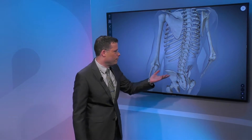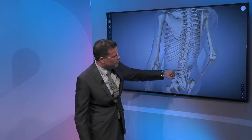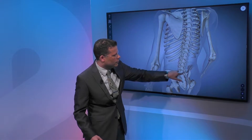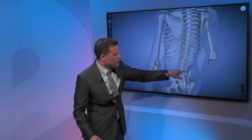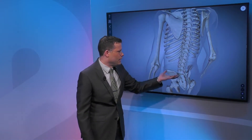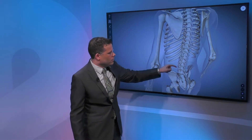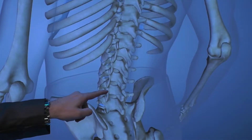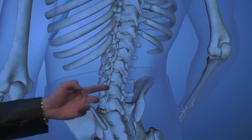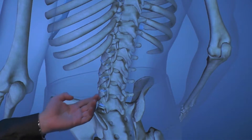Eventually, down the road, these joints start becoming a little more arthritic. These are called the facet joints, or the side joints. They can become arthritic like the knee, like the shoulder, like the hip. Those joints can be another source of back problems, and the disc can slip out as well.